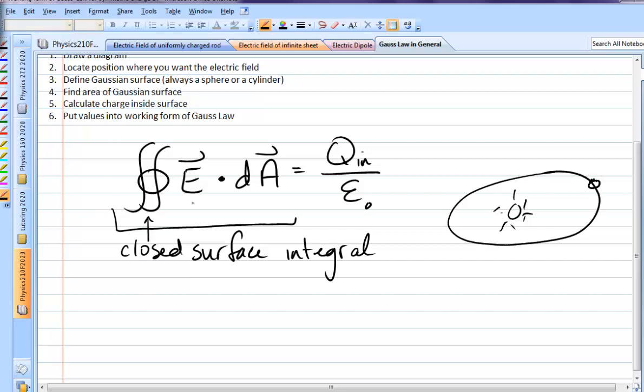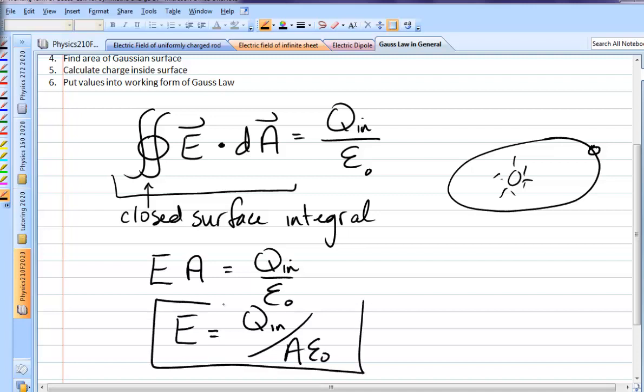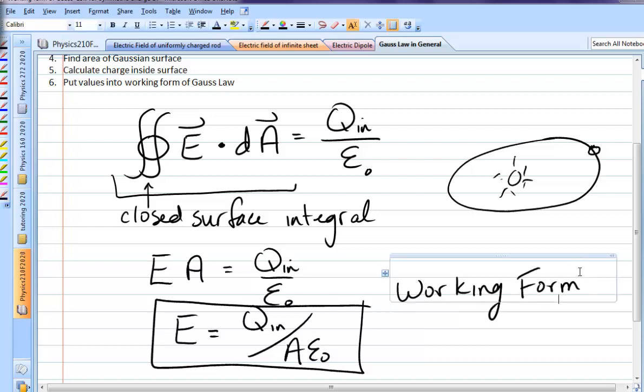In this very special case, that integral just becomes electric field times area equals Q_in over epsilon naught. When you solve that for the electric field to get Q_in over A epsilon naught, that is what I call the working form of Gauss's Law. It's a very simple equation. It was very powerful for calculating electric fields.